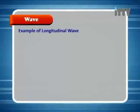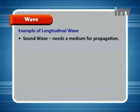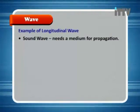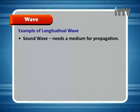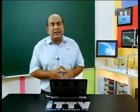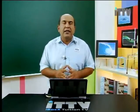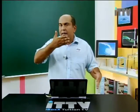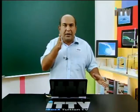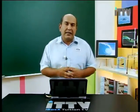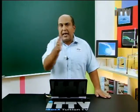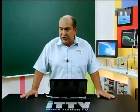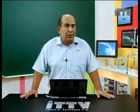The example of a longitudinal wave is a sound wave, which needs a medium for propagation. Basically, air in front is being pushed and pulled by the sound wave, moving back and forth, creating what we call areas of rarefaction and areas of compression.